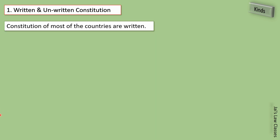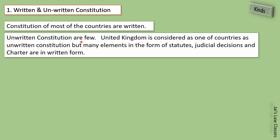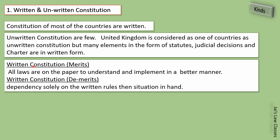The unwritten constitution exists in very few countries; the United Kingdom is considered one example. But many elements — in the form of statutes, judicial decisions, and charters — are in written form. So completely unwritten constitution does not exist in any country. Written constitution means what exists in written form, and unwritten constitution means what has not been formally written.